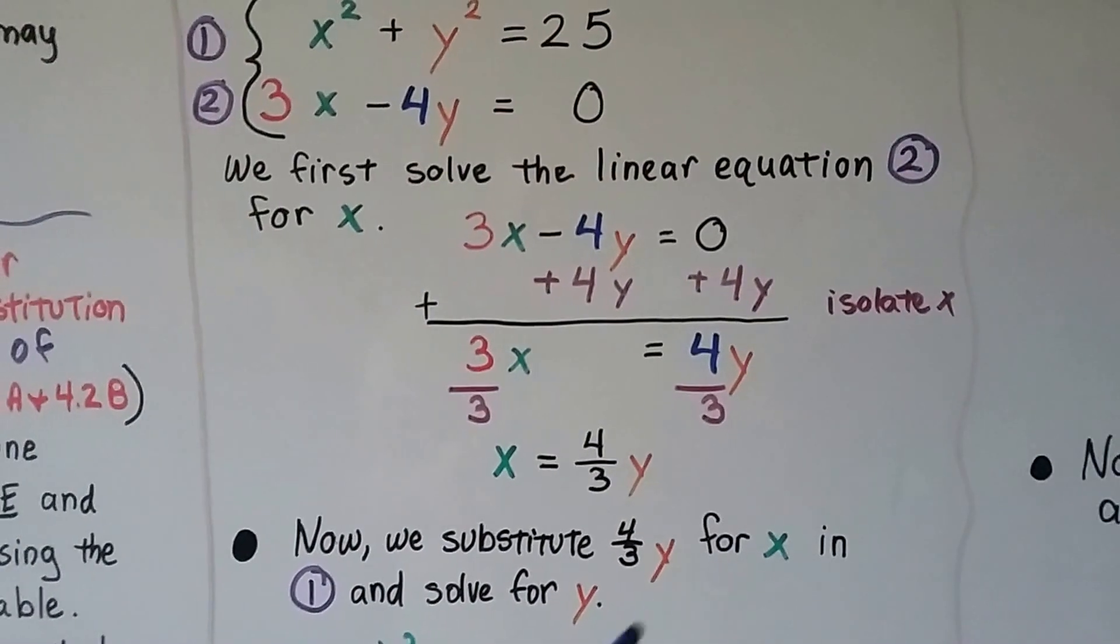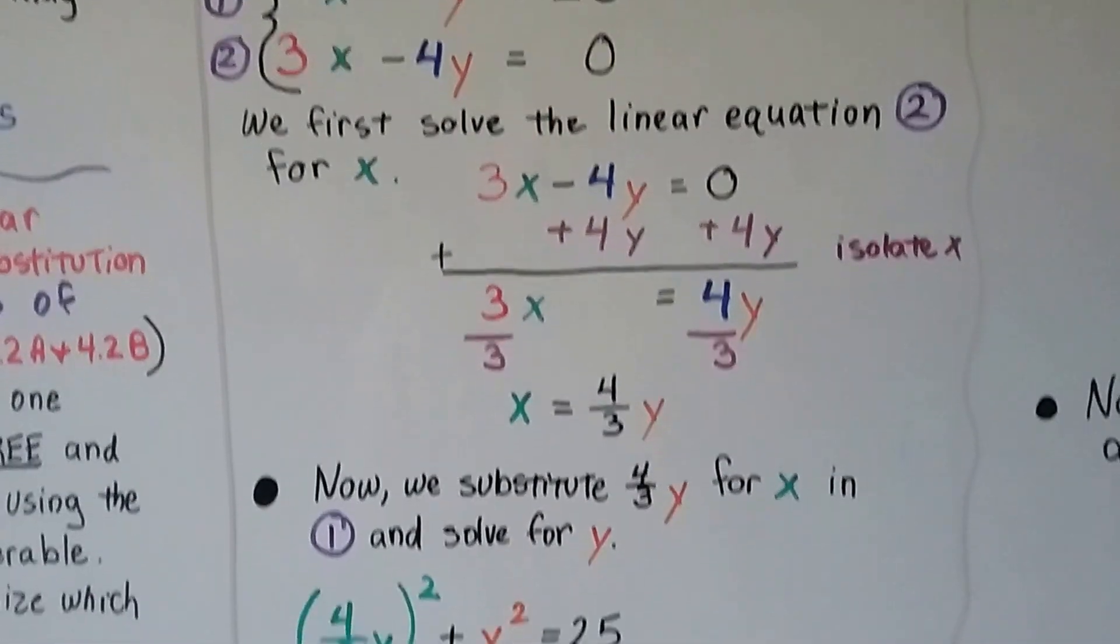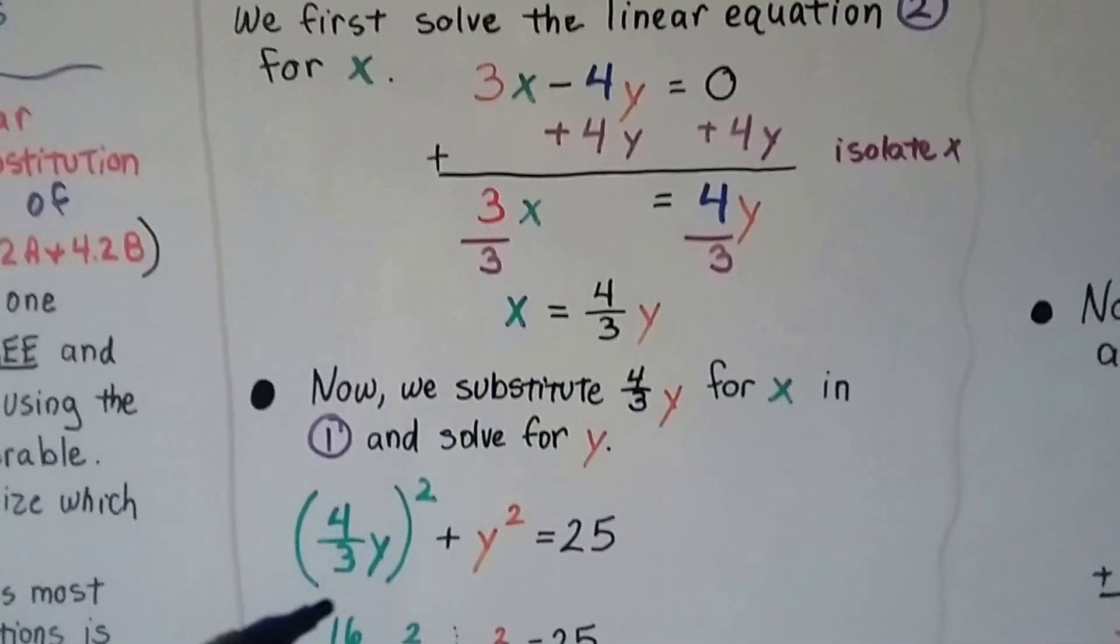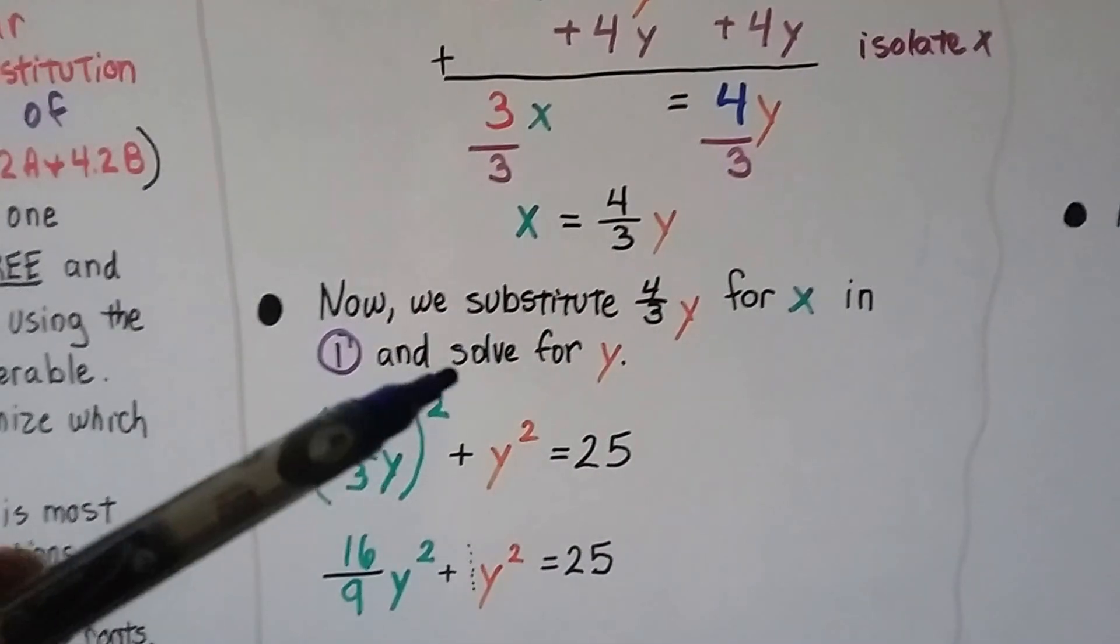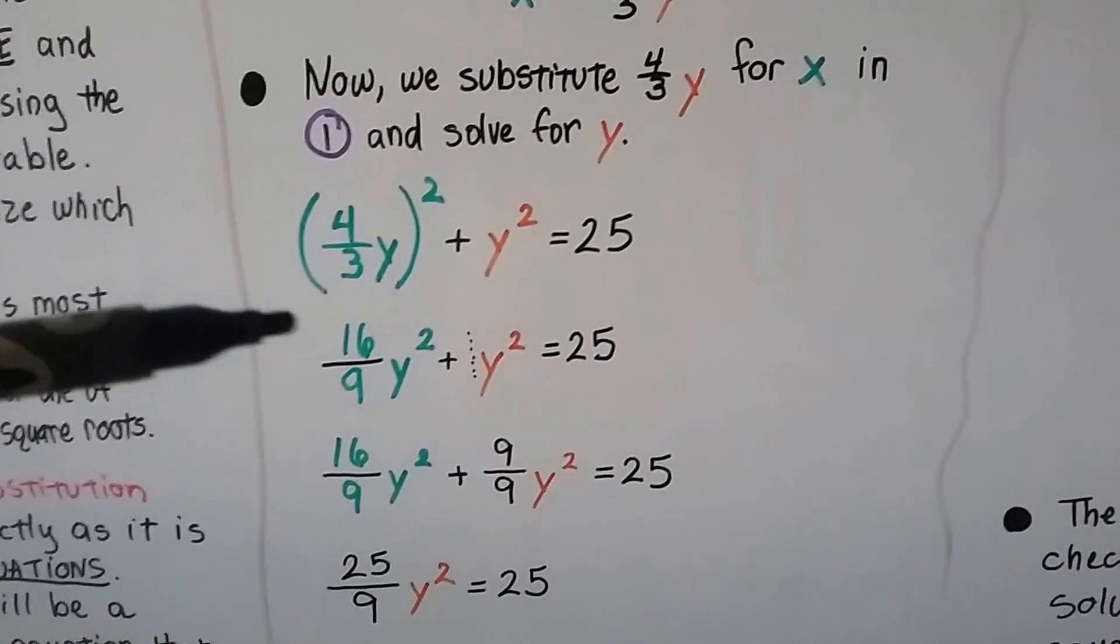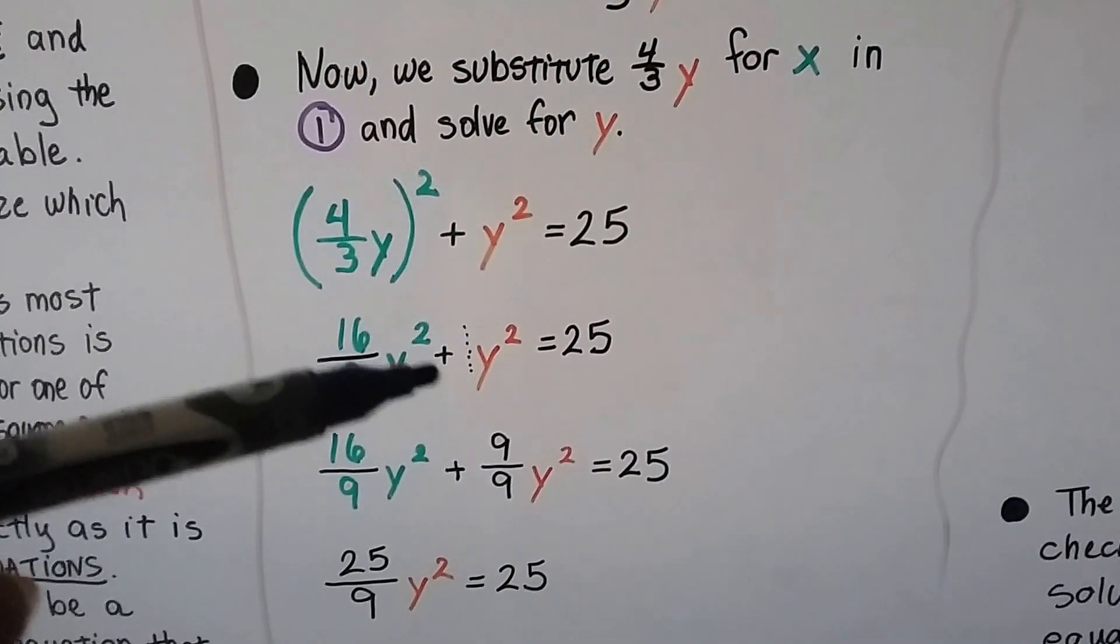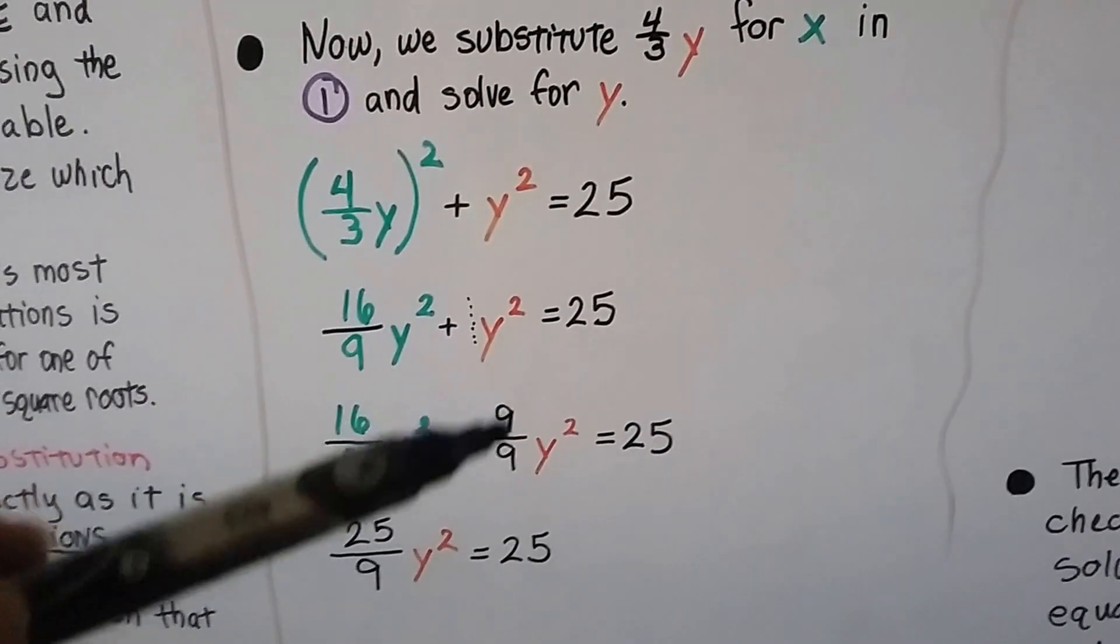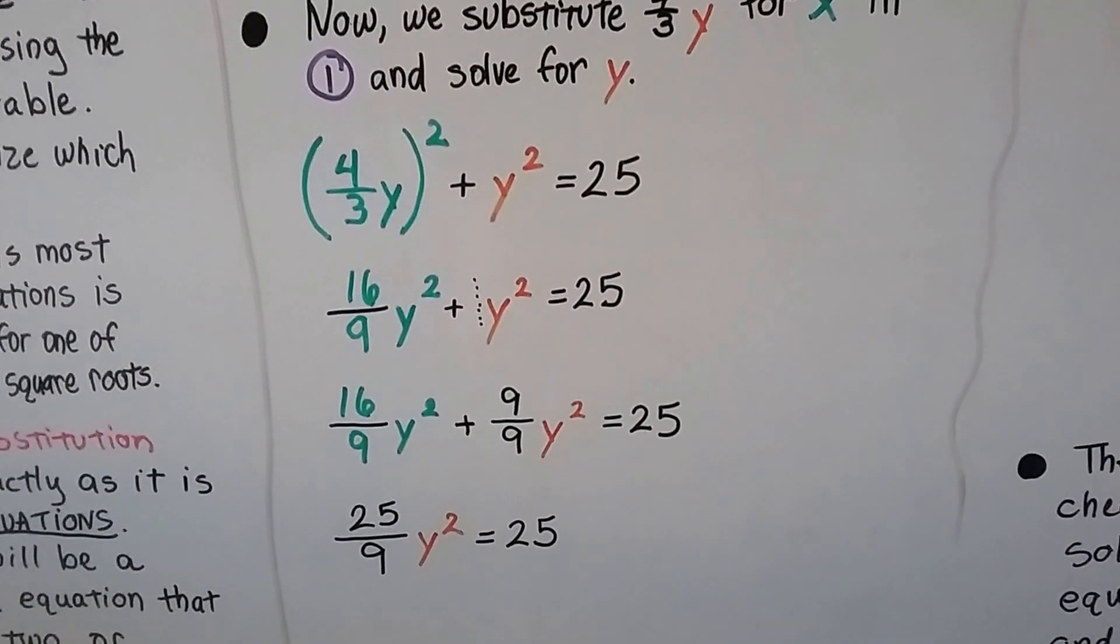Now we just substitute that 4/3 y for x in the first equation and solve for y. So we have (4/3 y)² + y² = 25. Remember, there's an invisible one in front of that y². So we've got 16/9 y² plus y² equals 25. If there's an invisible one here, that's like 9/9, right? So when we're adding this, we get 25/9 y² = 25.